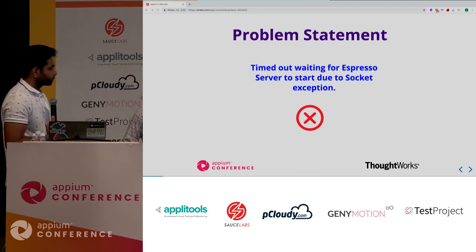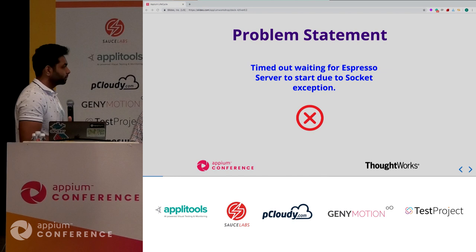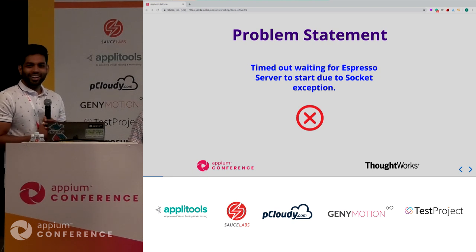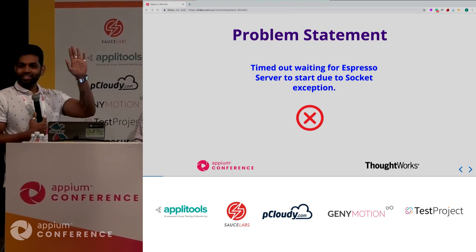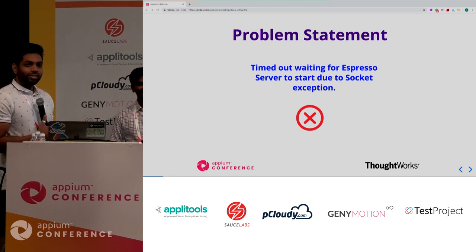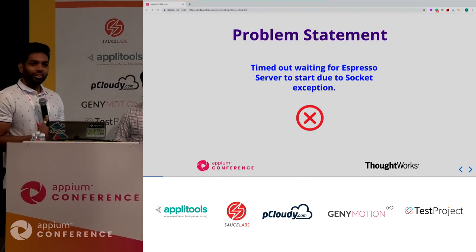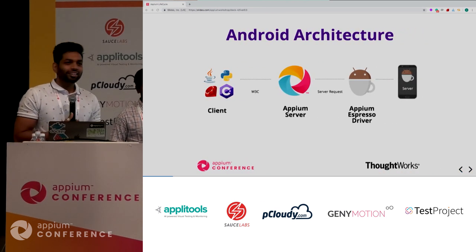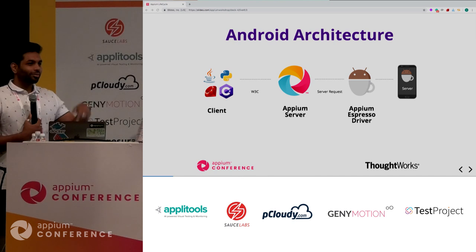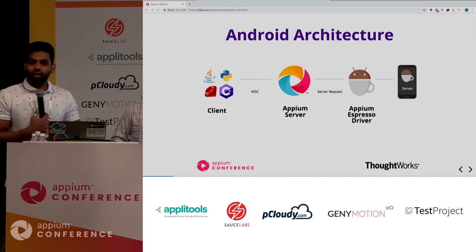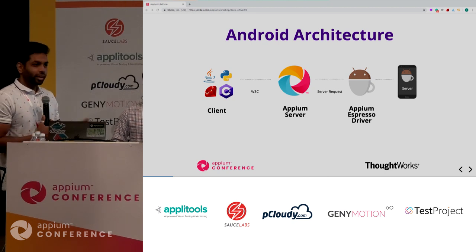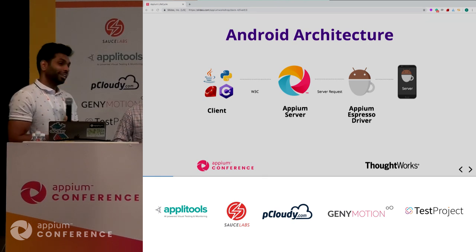It kind of reminds me of a fun fact: if you type 'who broke the build' in Selenium's IRC channel, it bumps up Simon's name. Similarly, if something's actually broken on the Espresso driver, it's probably Daniel. You folks need to catch hold of him - he's one of the people very actively contributing to the Espresso module. Whenever I go back, he says 'yeah, I know I broke this, I'm gonna fix this.'